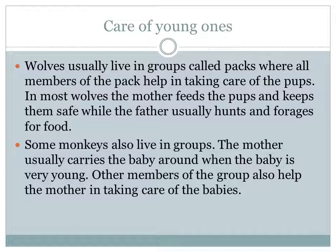Life cycle of a butterfly: the butterfly lays eggs on a leaf, and from the egg a small larva-like caterpillar emerges. It has no wings. It feeds on the leaves; when it grows, the old skin is removed and new skin grows — this is called the molting process. When it reaches a certain size, it enters a case called pupa. Within the case the pupa goes through remarkable transformation to become an adult butterfly.